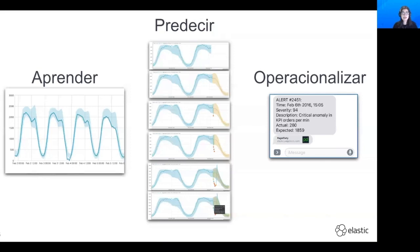Vamos a empezar con la detección de anomalías de series temporales. El caso de uso principal, basado en los comentarios de nuestros usuarios, es producir alertas mejores y producirlas más fácilmente. Si tienen patrones en sus datos, patrones regulares diarios o semanales, identificará esos patrones y construirá un modelo de lo que es normal, cuál es la línea de base. No tiene que crear diferentes alertas a mano con ciertos límites para diferentes días. El modelo crece con sus datos y ayuda a identificar lo que sucedió.